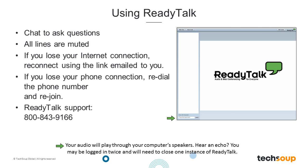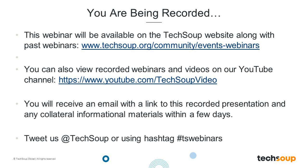If at any time the slides or the live screen sharing does not stay in sync with the audio, we recommend dialing in toll-free to the number that Ally is chatting out into the chat window. You can reach out to ReadyTalk support at 800-843-9166 if you have any technical issues. We will be recording today's event and make it available on our website at techsoup.org/community/events-webinars. This is also where you can find our upcoming webinars and events, and a full archive of our prior events.